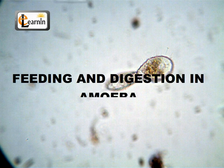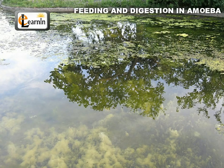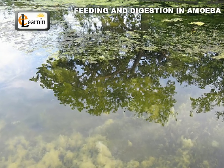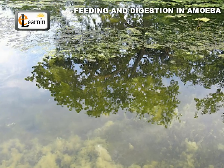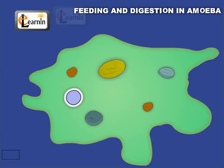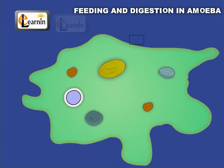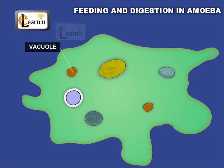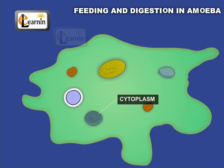Feeding and Digestion in Amoeba. Amoeba is a single-celled microscopic organism mostly found in pond water. It has a cell membrane, a rounded dense nucleus, and small bubble-like vacuoles in its cytoplasm.